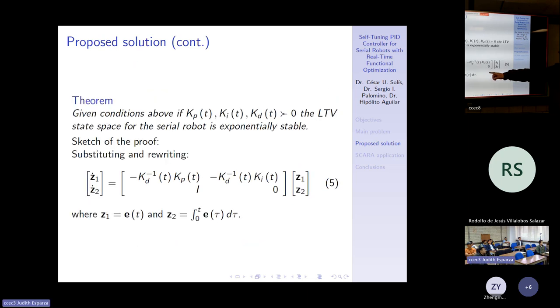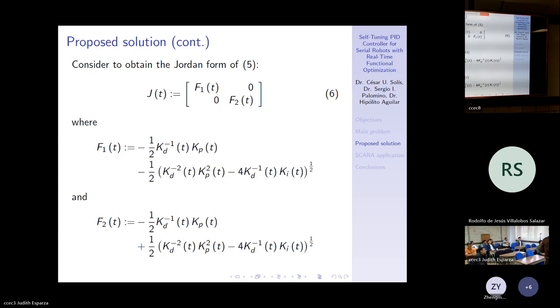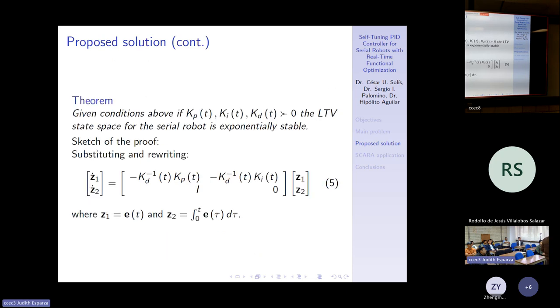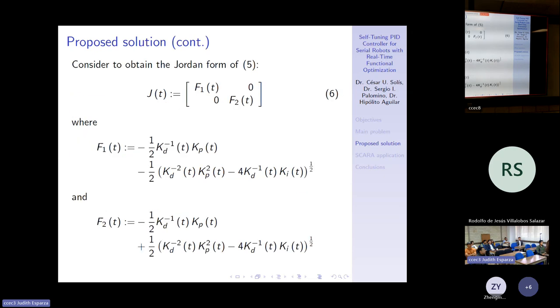I is the identity. Now, this state space is necessary to transform in a diagonal form, remembering that the gains are diagonal matrices. Then propose the transformation by the Jordan form in equation 6, where F1 and F2 is given by these equations. Clearly, this is a square root. Remembering that the gains are diagonal matrices, then it is possible to make this operation.